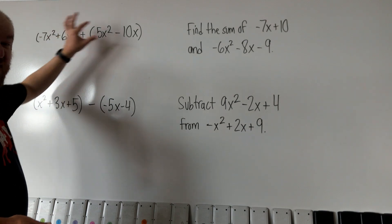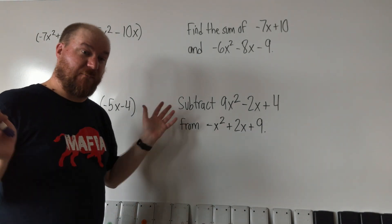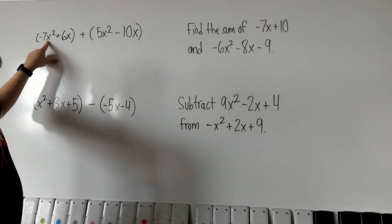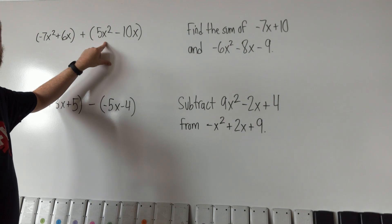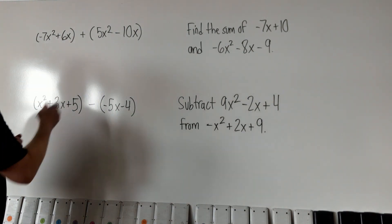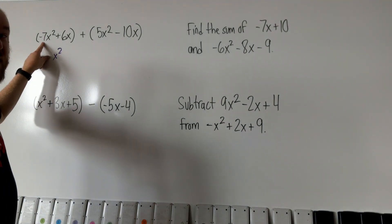So we're allowed to mix them, we're allowed to drop the parentheses and organize this and put everything together. So negative 7x squared and 5x squared, those can go together. Those are like terms. So I'm going to leave the x squared that they're attached to the same and I'm just going to combine the front number.